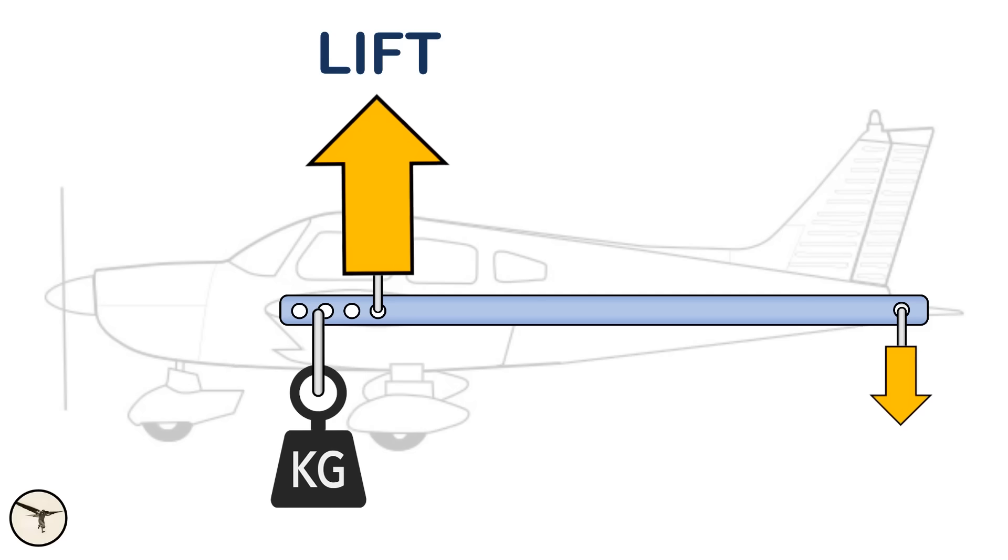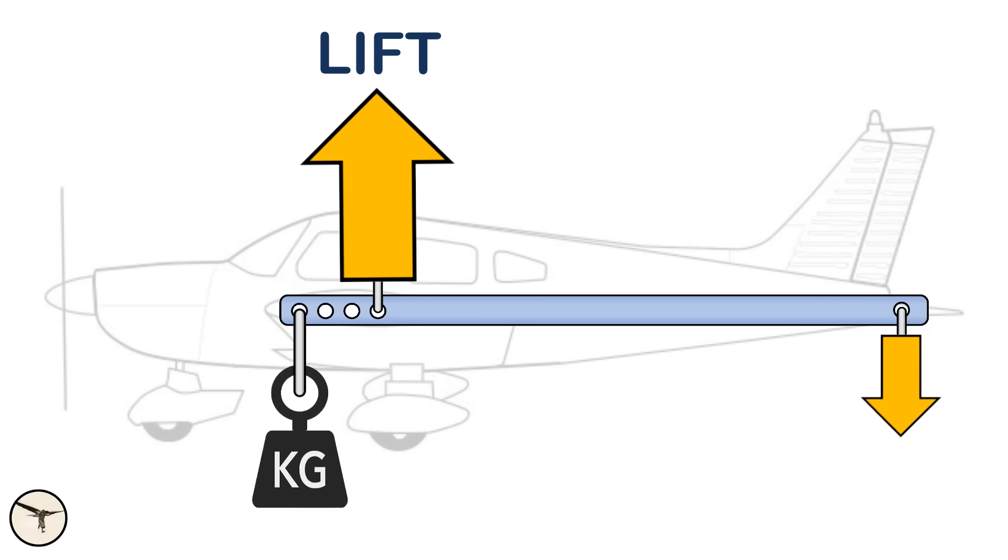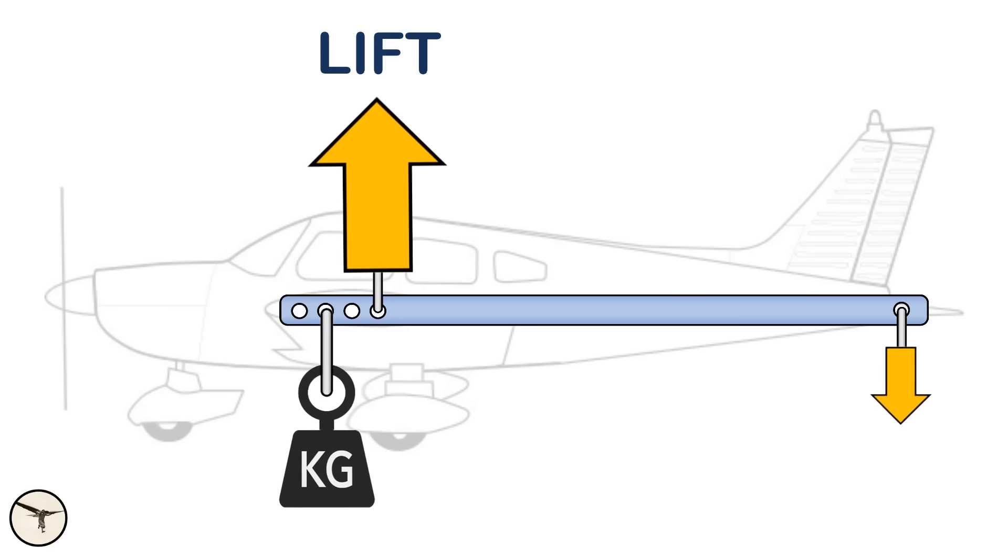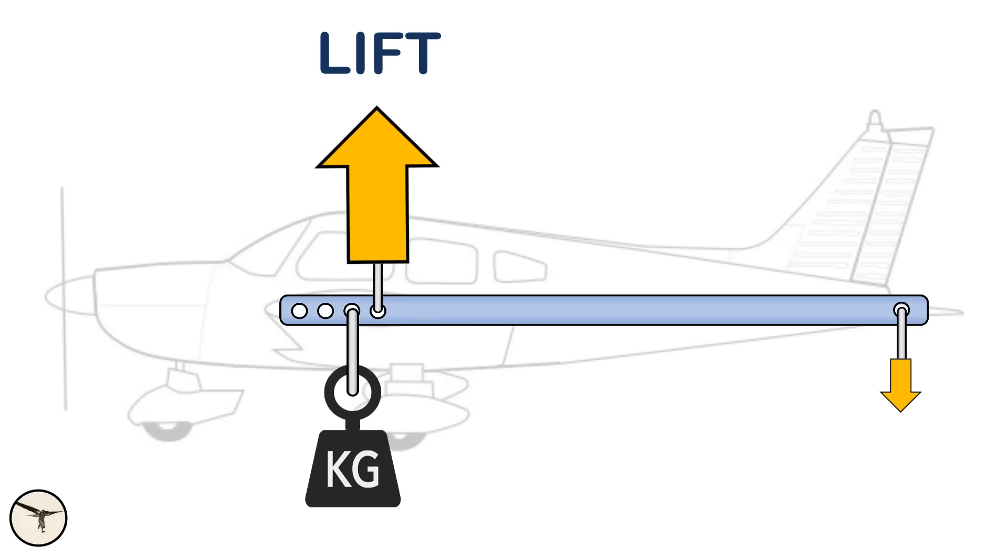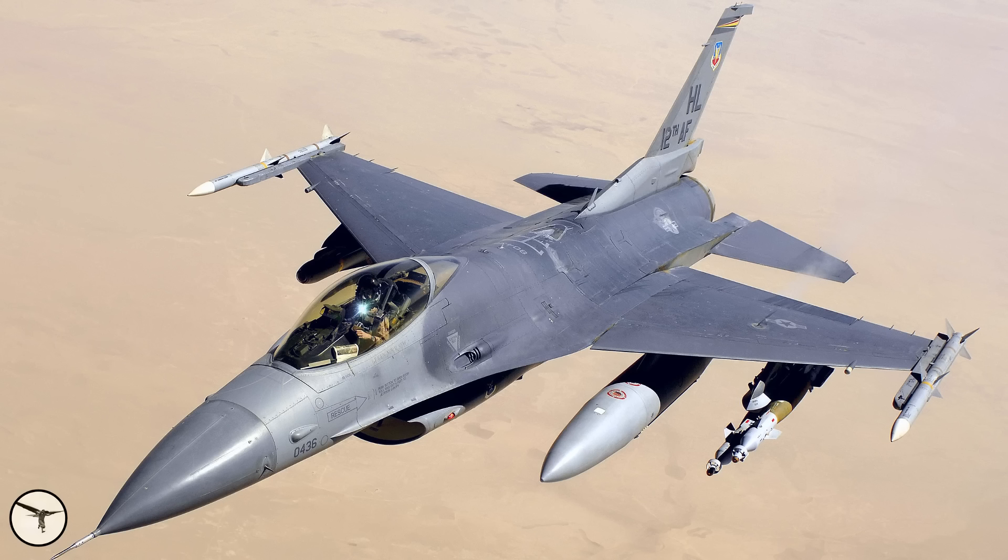If the center of gravity is too far forward, the aircraft becomes overly stable, reducing elevator authority since the elevator can only generate a certain amount of force. Conversely, if the center of gravity moves too far aft, the aircraft becomes unstable. Only fighter jets want that.